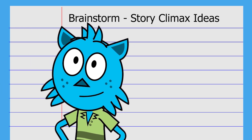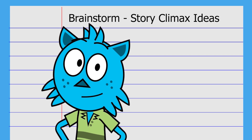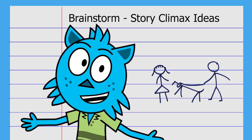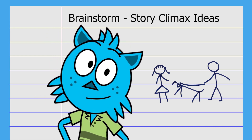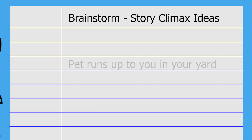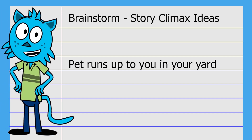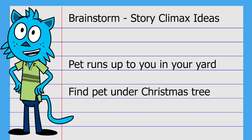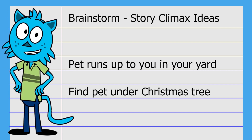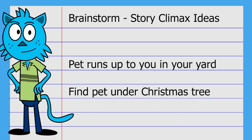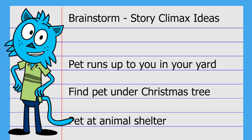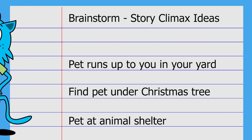Now, what about your story? The climax of my story takes place in my front yard when my neighbor walks up with a dog on a rope. But you might have a different idea when you look at the sources. You can brainstorm a list of ideas and then choose the one you like the best. Here's our first idea: you could find a pet when it runs up to you in your yard. Do you want to use the same climax I used, or do you have another idea? Maybe you could find a pet under the Christmas tree — your parents surprise you with a pet as a Christmas present. Or you could find a pet at an animal shelter. Choose the idea you like best, then draw a sketch on your story planner, just like I did. Just a quick sketch — stick figures are best.